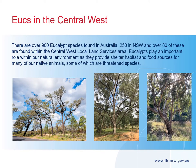There are over 900 eucalypt species found in Australia, 250 species in New South Wales and over 80 of these are found within the Central West Local Land Services area. Eucalypts play an important role within our natural environment — they provide shelter in the form of hollows, cracks and crevices in trunks and limbs, and are also a food source for many native animals, some of which are threatened species. Although you might know your local trees, it is often difficult to identify trees out of your local area or distinguish between species like Eucalyptus microcarpa (grey box) and Eucalyptus albans (white box).